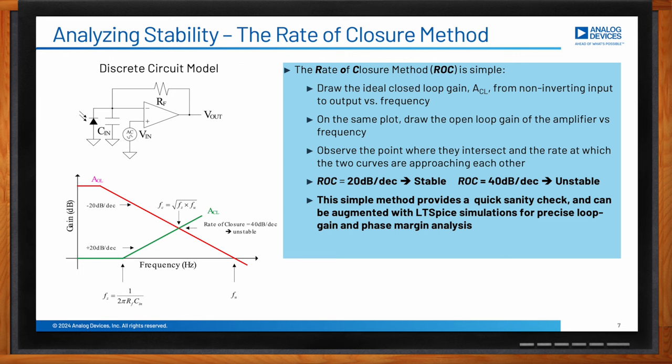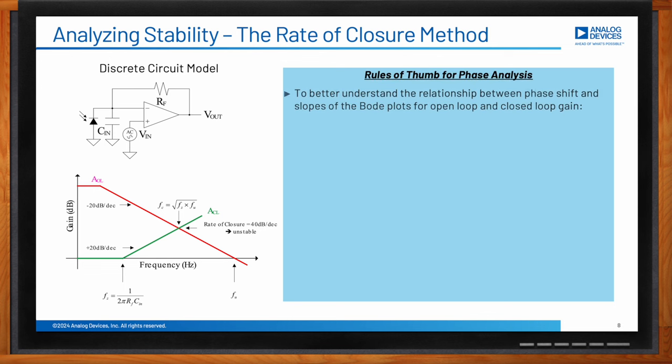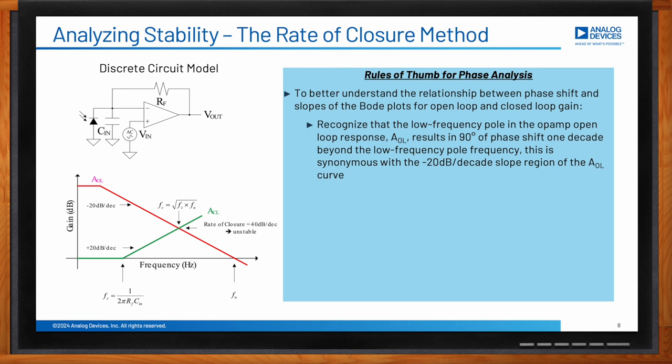Once you have a grasp on stability analysis using the simple hand analysis method, I'd always recommend augmenting that with SPICE simulations using LTSpice to get more precise results. LTSpice can be found on the Analog Devices website as a free download. The low-frequency pole in the op-amp's open-loop response A results in 90° of phase shift one decade beyond it, synonymous with the −20 dB/decade sloping region of the AOL curve.